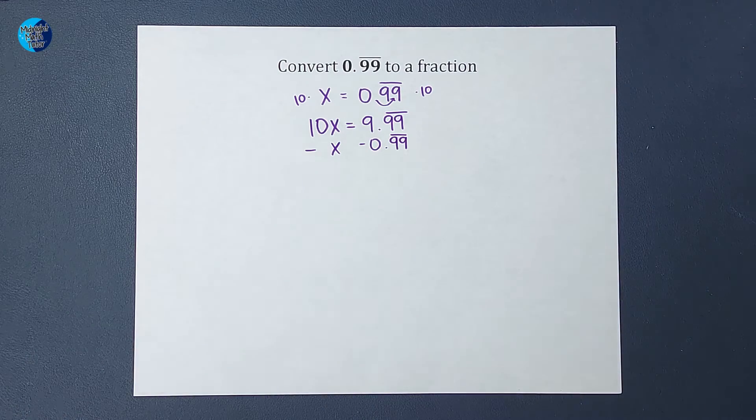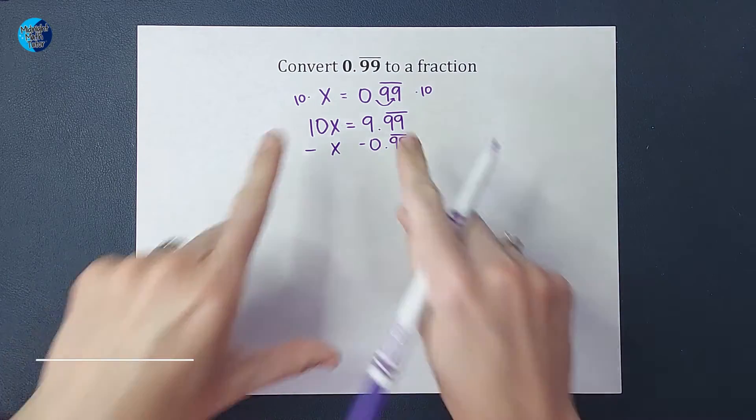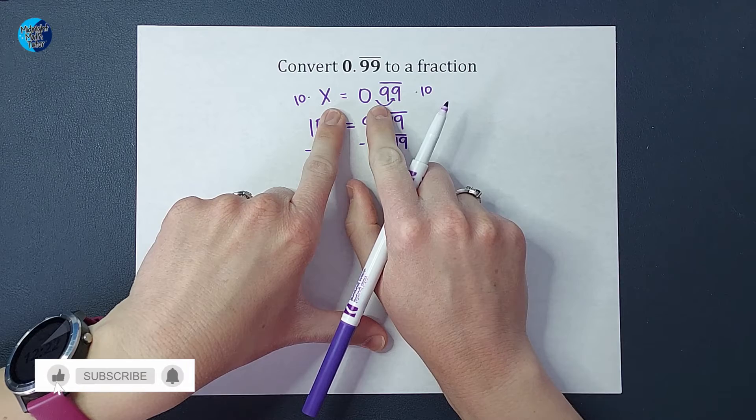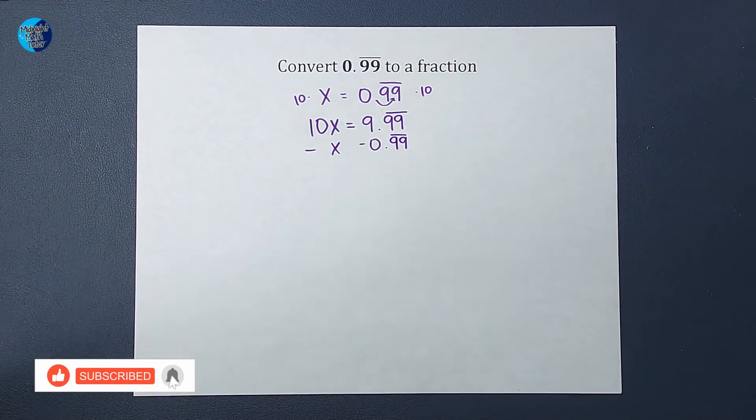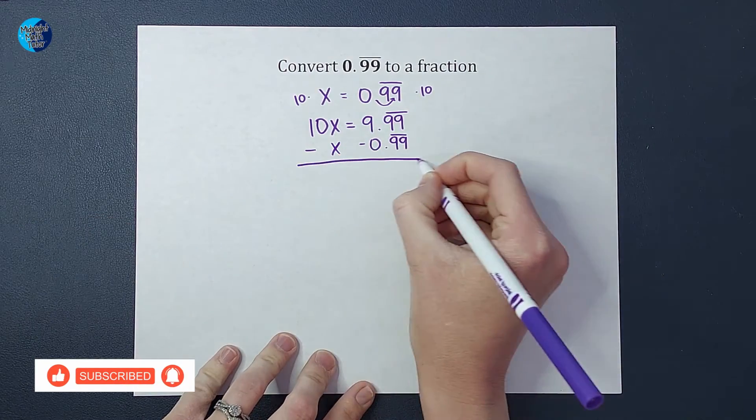Now if you're like, wait, you're subtracting different things from both sides. I'm not, because remember in this scenario, we're saying they're equal to each other. So my equation is still balanced.